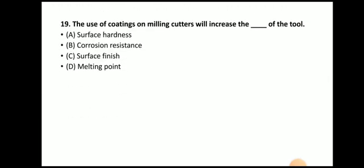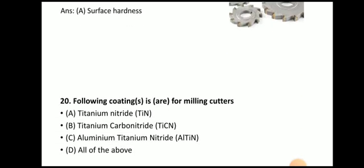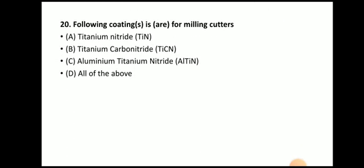Next question: the use of coating on a milling cutter will increase — tool surface hardness, corrosion resistance, surface finish, or melting point. The answer is surface hardness. Next: which coatings are used for milling cutters — titanium nitride, titanium carbon nitride, aluminium titanium nitride, or all of the above. The answer is all of the above.